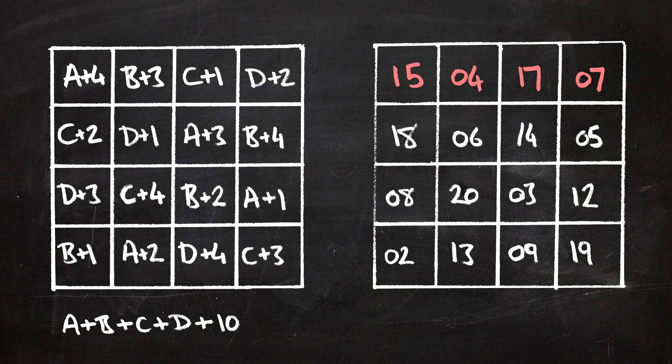Now if that doesn't work for you, you could use completely different numbers — it doesn't have to be 1, 2, 3, 4. It could be 5, 10, 17, and 50. It doesn't matter. I invite you to try it out, have a bit of a play, have a bit of an experiment, and see what you can discover.